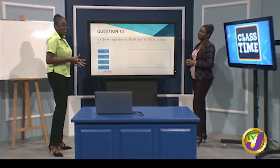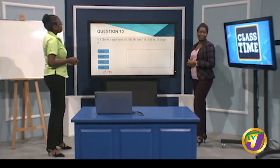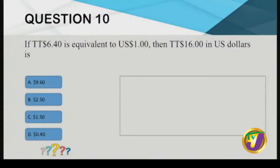Question ten: if $6.40 TTD is equivalent to $1 USD, then $16 TTD is how much in US dollars? We're comparing TTD and USD and using the given rate. If I double $6.40 I get about $12 TTD for $2 USD; if I triple it, I get about $18 TTD for $3 USD — so the answer is between $2 and $3.